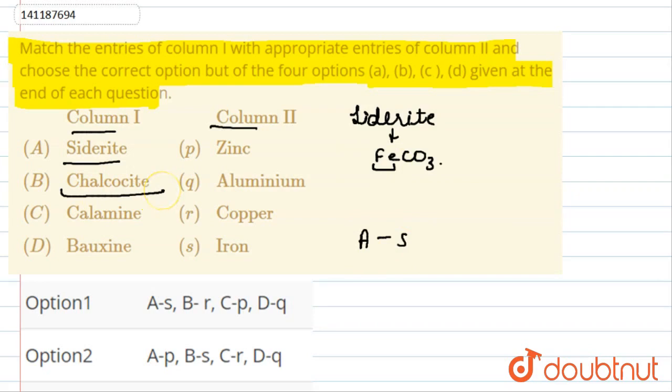B is Chalcoside, which is a very important mineral. It is a copper ore with the formula Cu2S. So B matches with R.